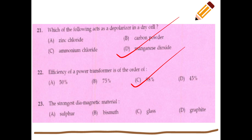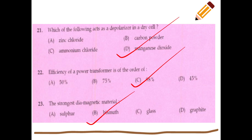The strongest magnetic material is bismuth. This relates to diamagnetic, paramagnetic, and ferromagnetic classifications. We need to learn the details of the magnetism portion.